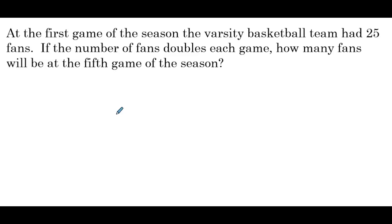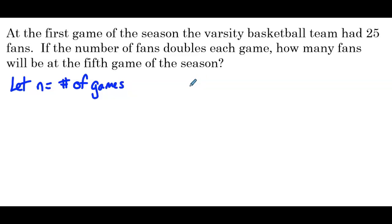At the first game of the season, the varsity basketball team had 25 fans. If the number of fans doubles each game, how many fans will be at the fifth game of the season? We're going to let n be equal to the number of games. The number of fans doubles each game, so we'd be multiplying by two to get the number of fans from game to game. That would be a common ratio — multiplying over and over again — so that means we have a geometric sequence with a common ratio of two.